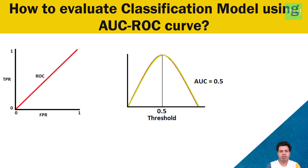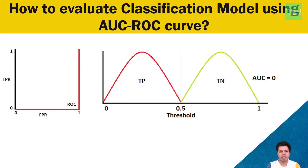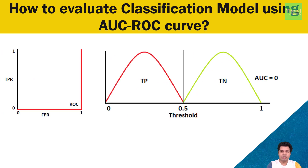Finally, let's consider the scenario when AUC is equal to 0. Here, the red curve representing true positives has moved to the left-hand side and the green curve representing true negatives has moved to the right-hand side. The ROC curve in this case is the reciprocal of the ideal ROC curve. This represents a classification model which reciprocates the classes — meaning it predicts the positive class as negative and vice versa.